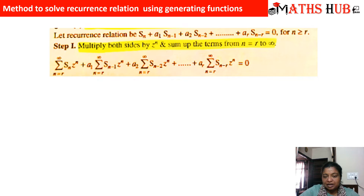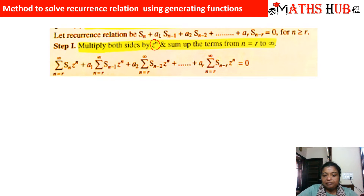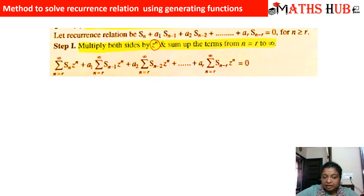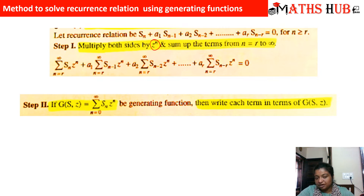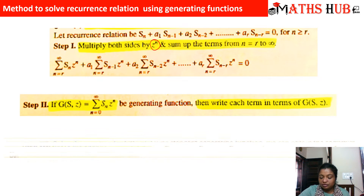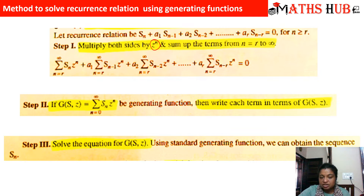First of all, we will multiply the entire recurrence relation by z to the power n, and after multiplying by z^n we will sum up the terms, taking the summation from the lowest index of the sequence till infinity. After multiplying and summing, we will get an equation, then convert each of these summations into a generating function. In step two we calculate the generating function, and in step three we derive the sequence for which that generating function was obtained.